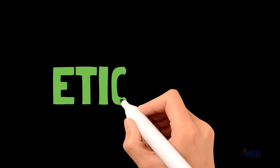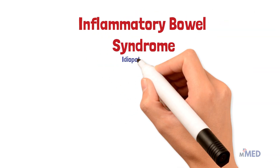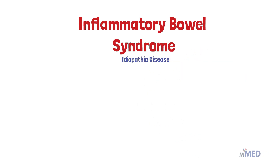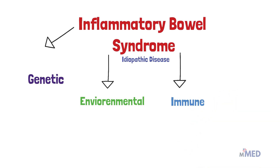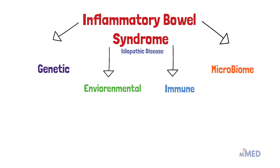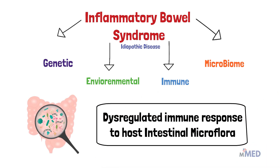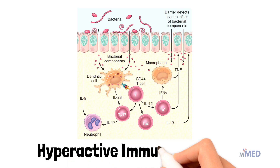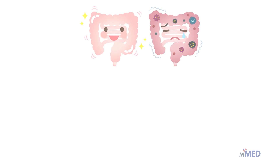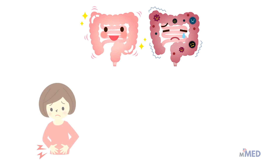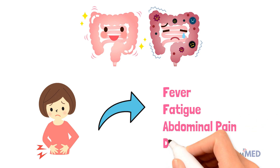IBD is a chronic GI disease that is quite prevalent. This disorder has overlapping pathological characteristics, so the precise etiology of IBD is still debated, although most mechanisms involve genetic, environmental, immune, and microbiome factors. The etiology of IBD can be summarized as a dysregulated immune response to host intestinal microflora, where bacteria living in the gut can cause a hyperactive immune response leading to inflammation.